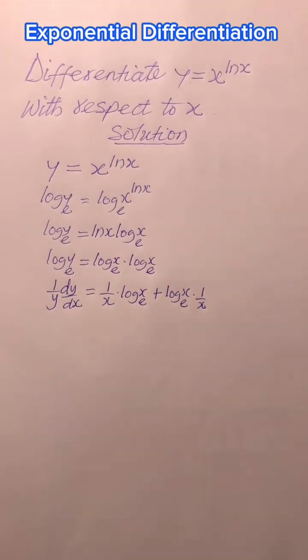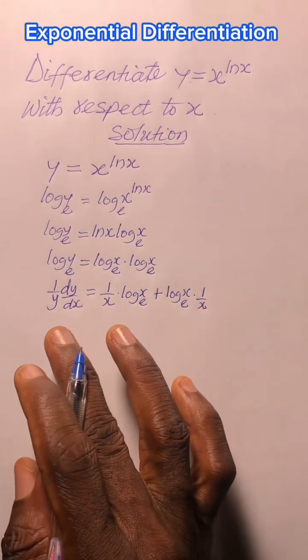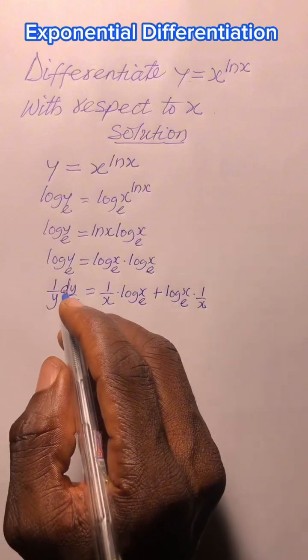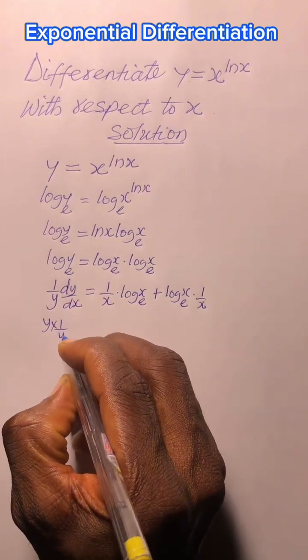The next thing to do now is to rearrange and then multiply through by y so that on the left hand side we have dy/dx. So we have y times 1/y · dy/dx equal to y multiplying everything here.